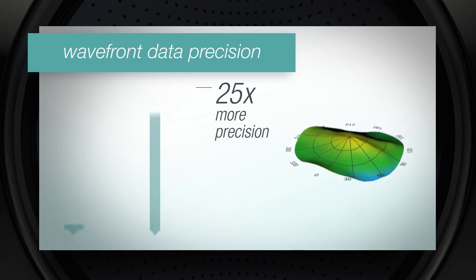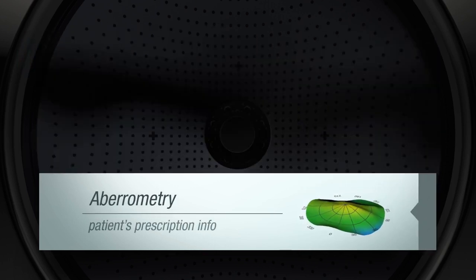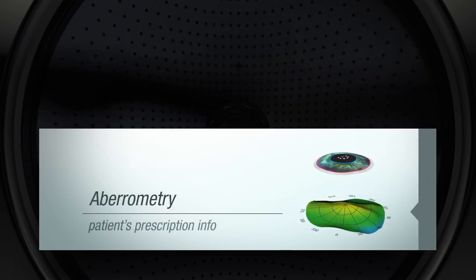In addition to determining a patient's prescription information, the iDesign system measures pupil size in different lighting conditions.